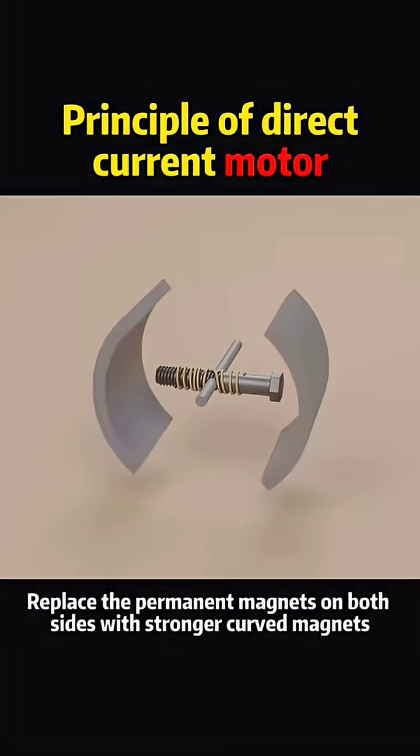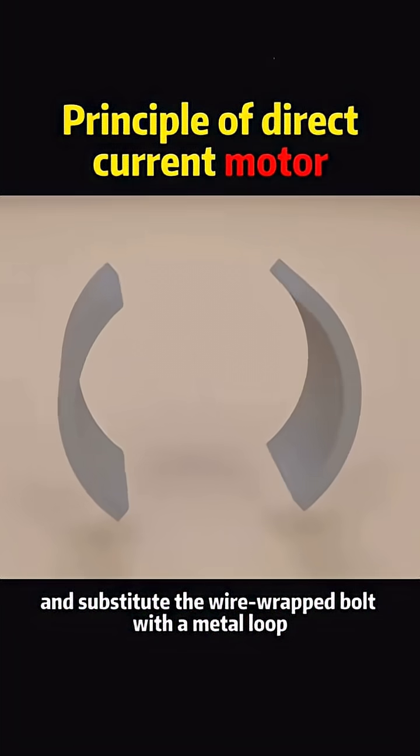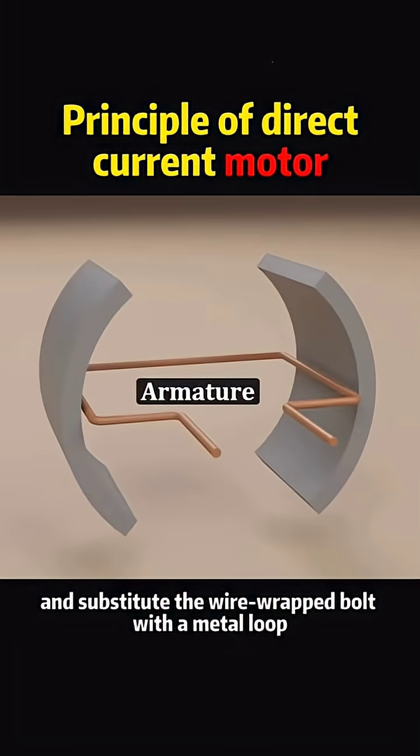Next, we improve it. Replace the permanent magnets on both sides with stronger curved magnets and substitute the wire-wrapped bolt with a metal loop.